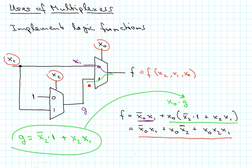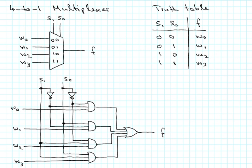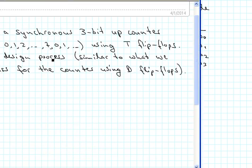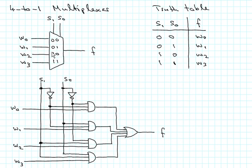So here is another example of a multiplexer. This one is larger, it has four inputs, four data inputs and one data output. Typically those multiplexers come in the form of having a power of two in the number of inputs, so we would have two input multiplexers, four input multiplexers and so forth.